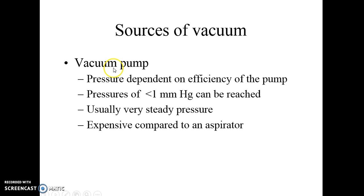Another way to get a vacuum is to use a vacuum pump. It has oil in the system, which has a much higher vapor pressure, allowing you to achieve a much lower pressure. Depending on the efficiency of the pump, you can pull an incredibly low pressure, and because it's an electronic machine running at a steady rate, you get a steady pressure. However, vacuum pumps are very expensive and can be dangerous.